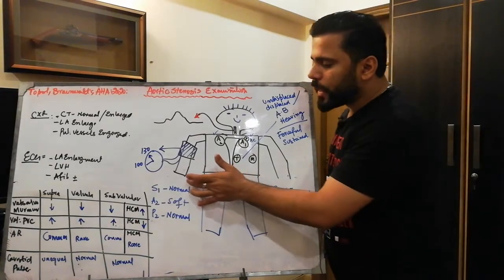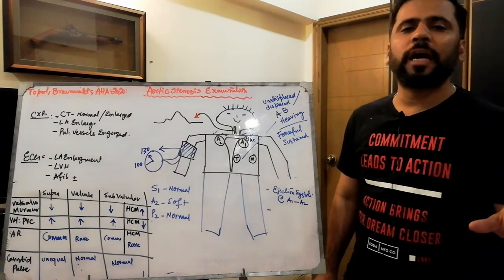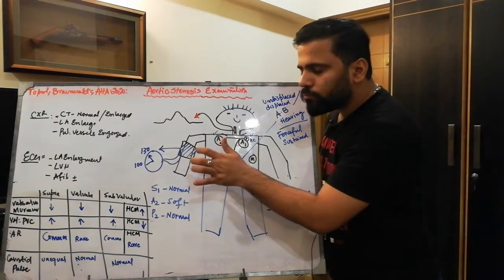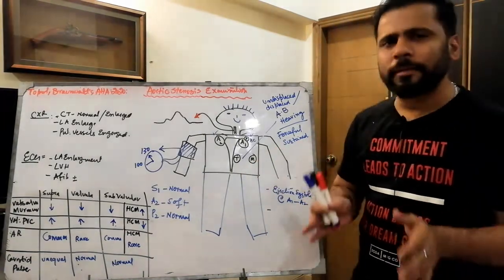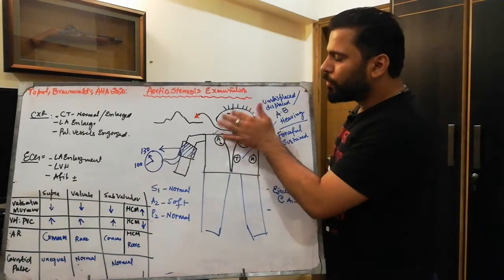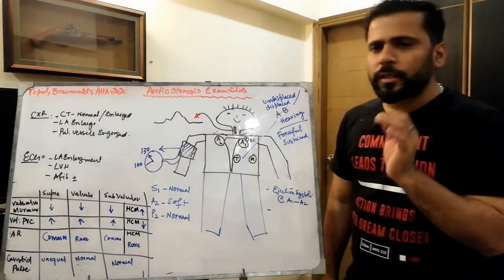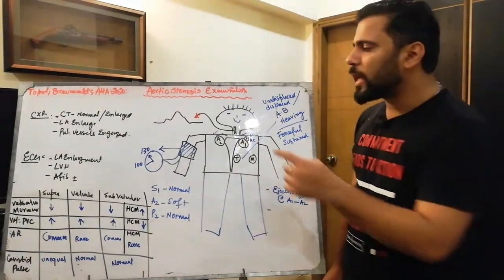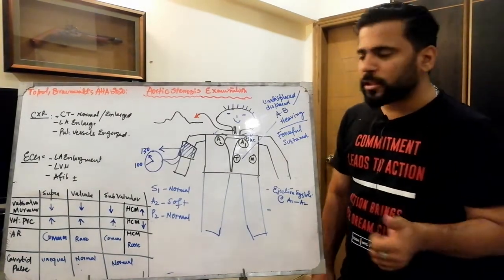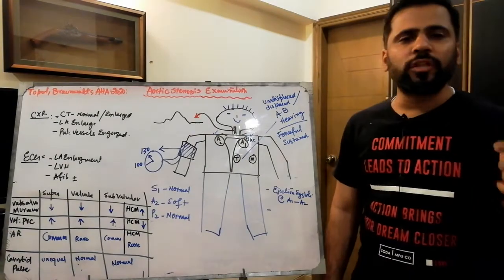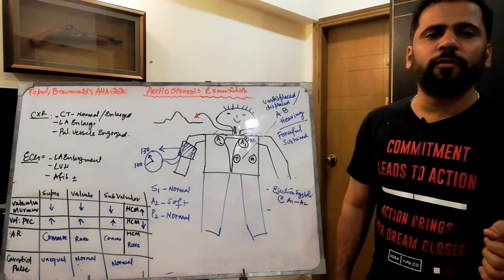First, you have to look for the peripheral signs. Check the blood pressure — you will find a narrow pulse pressure, which is also a sign of severity in aortic stenosis. The pulse will be low volume, and a low-volume pulse is again a sign of severity. You also look for signs of anemia on facial examination.